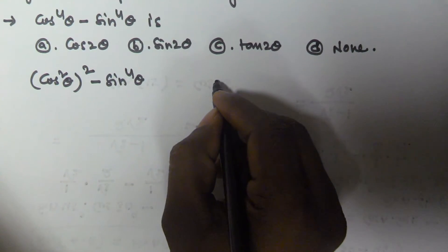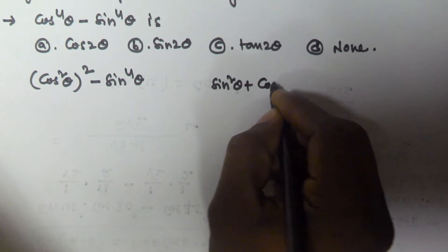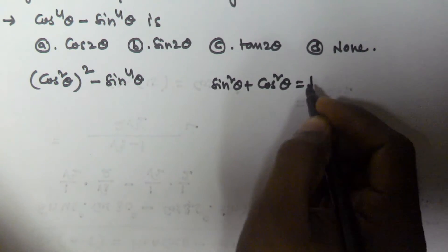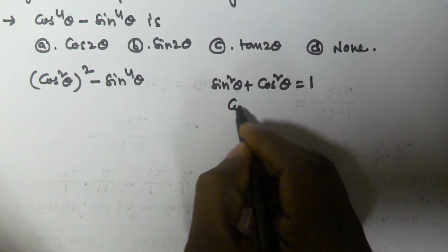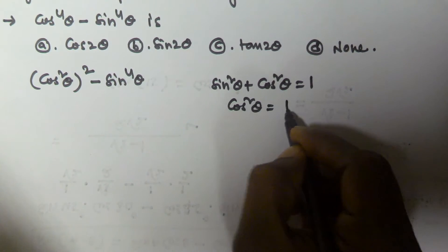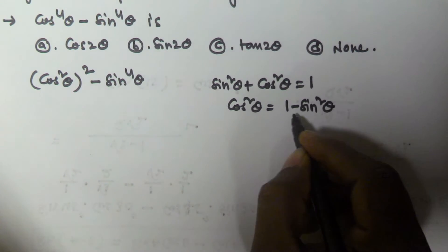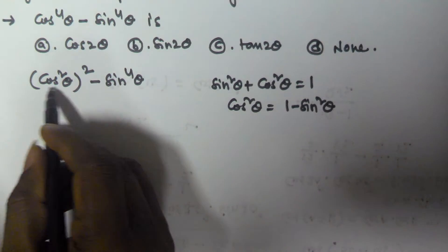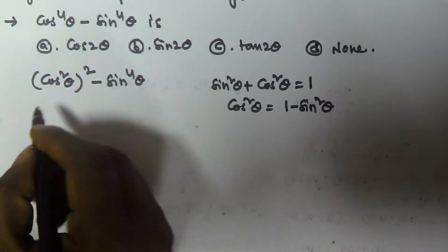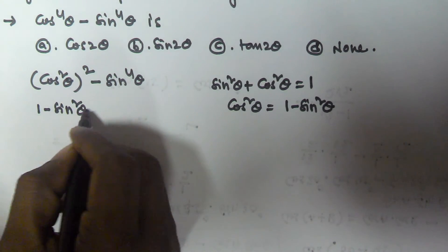In the second video I told you that sine squared theta plus cos squared theta is equal to 1. From this, cos squared theta is equal to 1 minus sine squared theta. So I substitute 1 minus sine squared theta in place of cos squared theta.